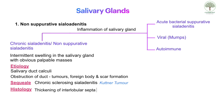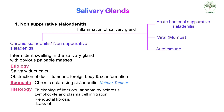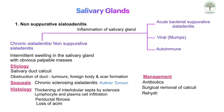Under the microscope we see thickening of interlobular septa by sclerosis — that's why the name is sclerosing sialadenitis — lymphocytic and plasma cell infiltration because it's a chronic condition, periductal fibrosis, and loss of acini structure. Management involves giving antibiotics, surgical removal of calculi, and rehydration to increase salivary gland flow.